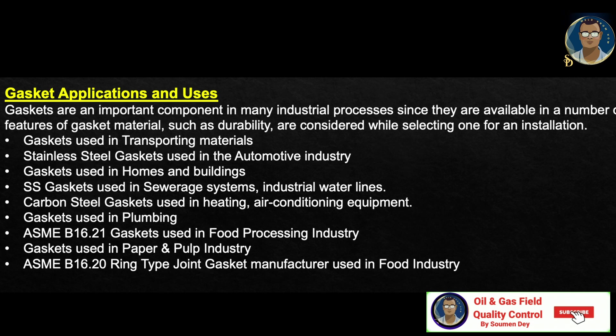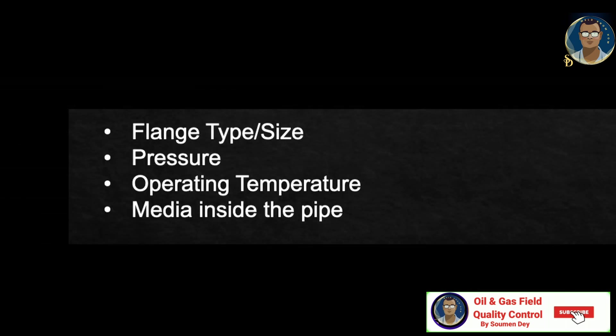ASME B16.20 ring type gaskets. Gaskets are manufactured in many different materials — choosing the right material is vital to suit the application and the environment where it will be used. You should refer to ASME B16.5 and consult a reputable gasket manufacturer. You will need to provide the manufacturer with the following information: flange type or size, pressure, operating temperature, and the media inside the pipe — that means the service the pipe or piping carries.